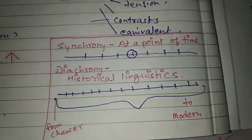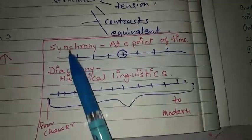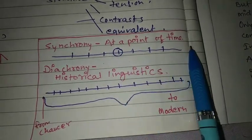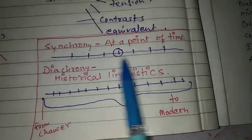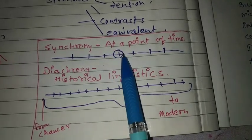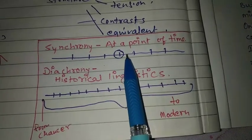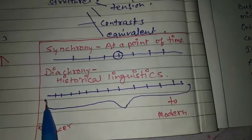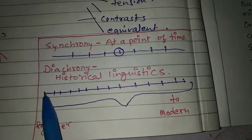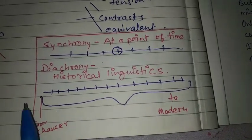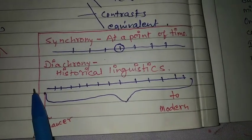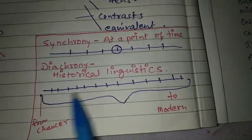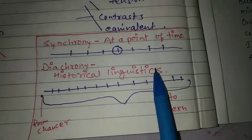Here we have synchrony and diachrony — both are studies of language. Synchrony is the study of a language at a specific point in time, like studying language at one point on a timeline. Diachrony is historical linguistics — the study of the history and development of language, for example, the development of language from Chaucer to modern times.